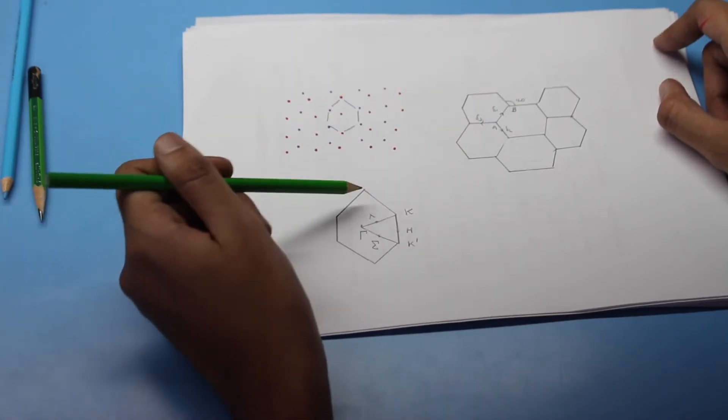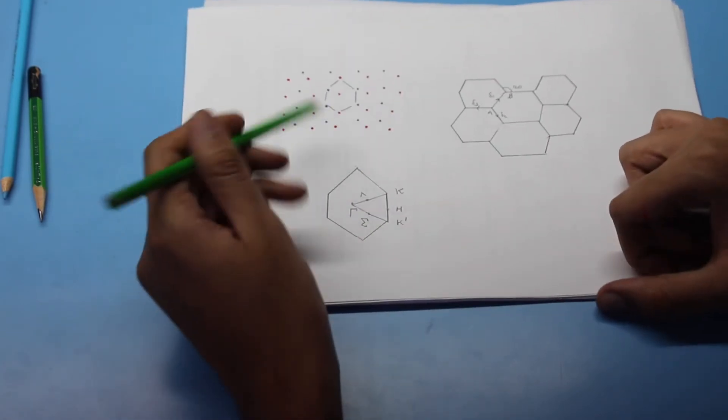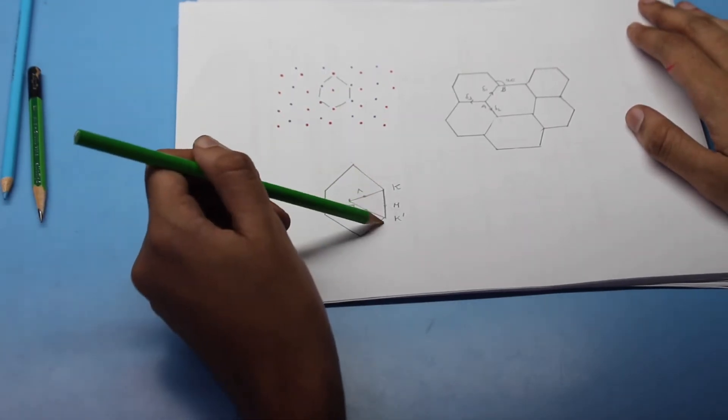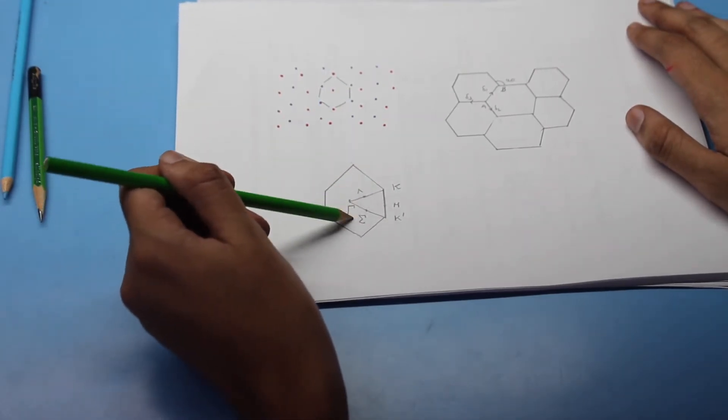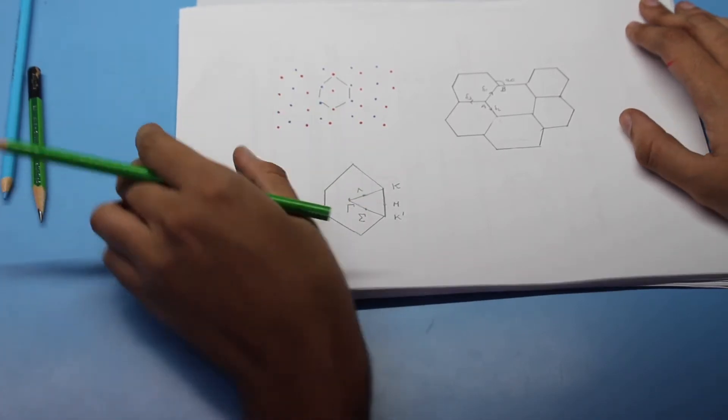Here I have marked some points in a single graphene hexagon which are of interest to us. They have been named K, K prime, H, lambda, sigma and tau. We will come to these points when we discuss the band structure of graphene.